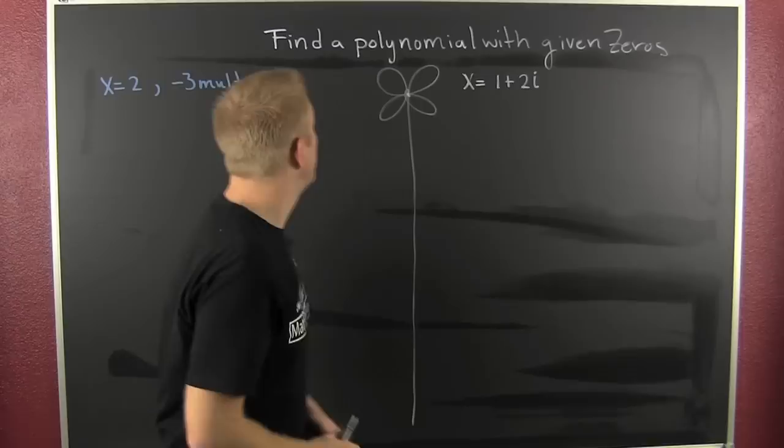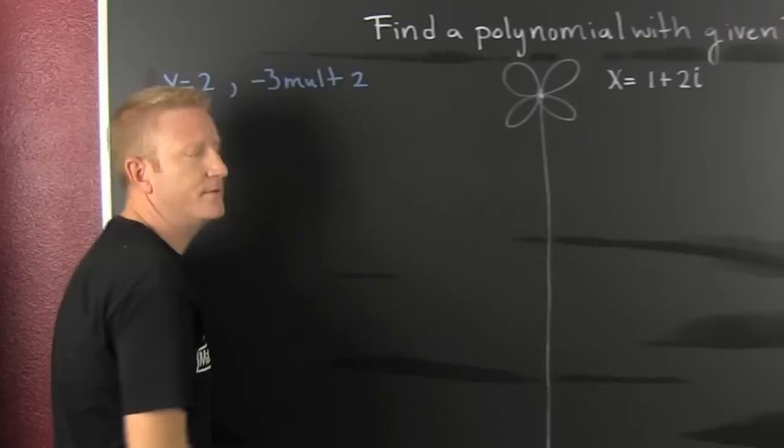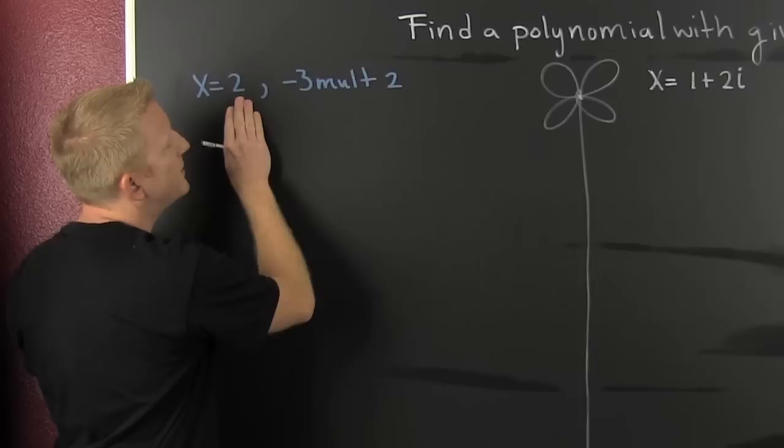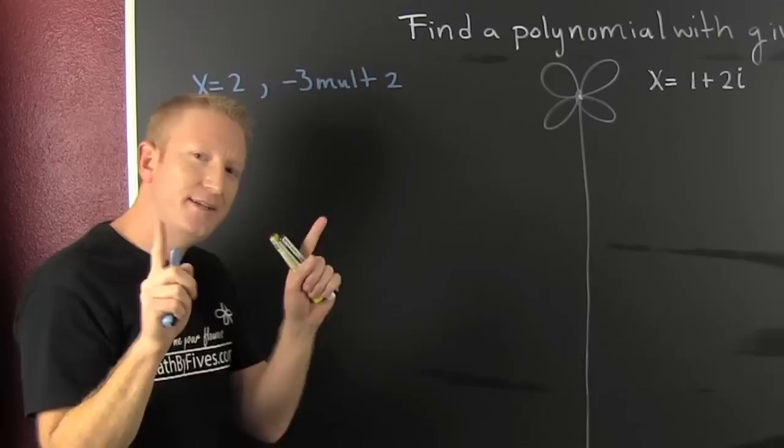We're trying to find a polynomial with the given zeros of this degree, of course. Hey people, this is kind of like the reverse of the zero factor property.